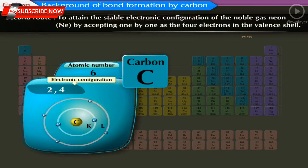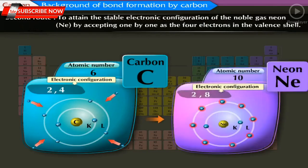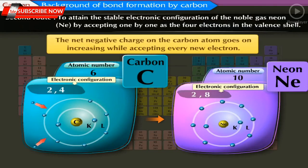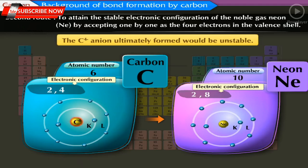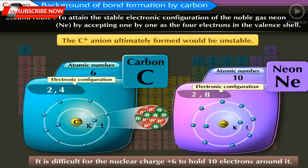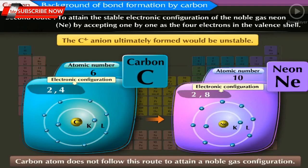Second route: To attain the stable electronic configuration of neon by accepting 4 electrons one by one into the valence shell. In this method, the net negative charge on the carbon atom increases with every electron accepted, requiring more energy to overcome the increasing repulsive force. Moreover, the C⁴⁻ anion ultimately formed would be unstable, as it would have a small size with a high net charge, making it difficult for the nuclear charge of +6 to hold 10 electrons. Therefore, carbon does not follow this route either.